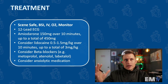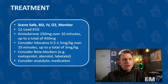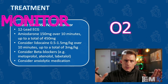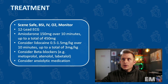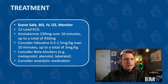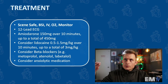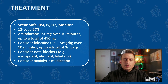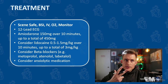What I would look for as a passing card: the first thing you're going to want to do is regurgitate the mantra — scene safe, BSI, IV/O2/monitor. Every single patient in static cardiology gets this. Because this patient is stable, I would then say perform a 12-lead ECG. Your first line anti-dysrhythmic for this patient is amiodarone. Because this patient is stable, you'll be giving 150mg of amiodarone over 10 minutes, and you may repeat this up to a total dose of 450mg — so a total of 3 doses of amiodarone.